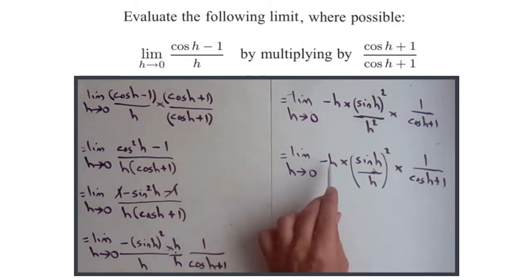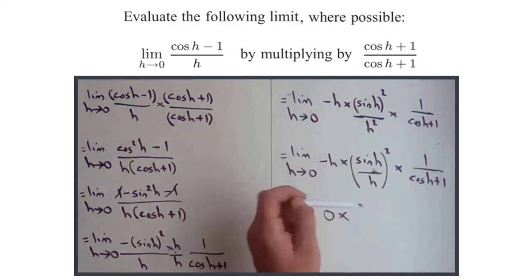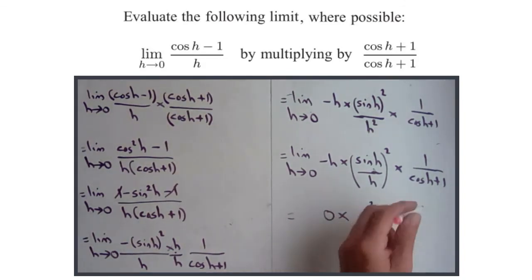But I can now say this equals, well, as h approaches 0, minus h approaches 0, so that's just 0, times, this is the limit as h approaches 0 of sine h over h, well, that's 1. And then we square it, times, and I've just said, as h approaches 0, cos h approaches 1, cos h plus 1 approaches 2, and this is just 1, so times 1 half. And this, now, is not indeterminate, because it's 0 times something that's non-zero.